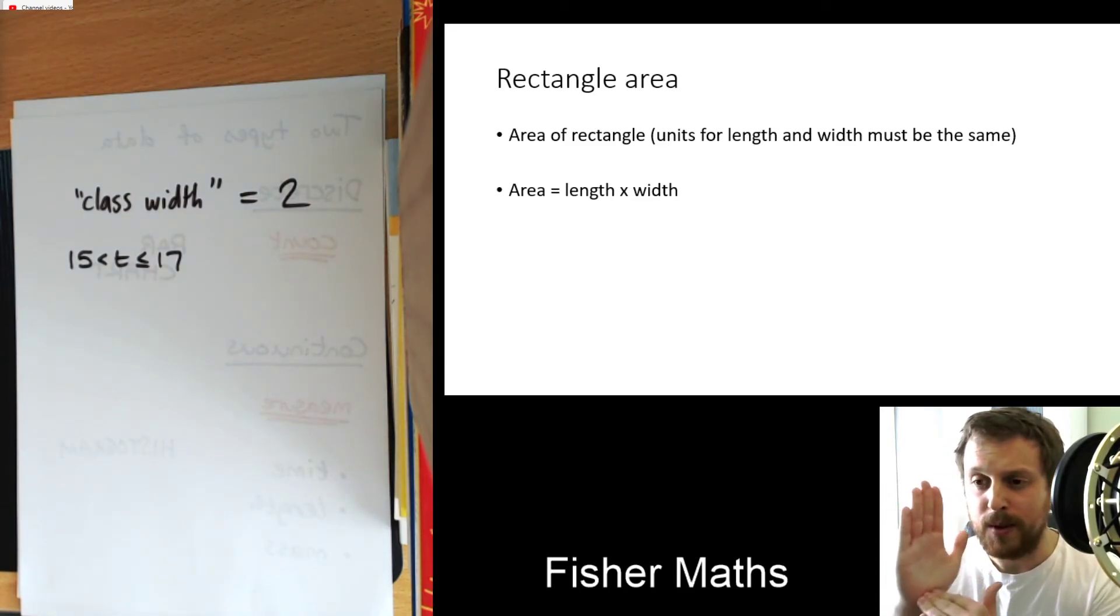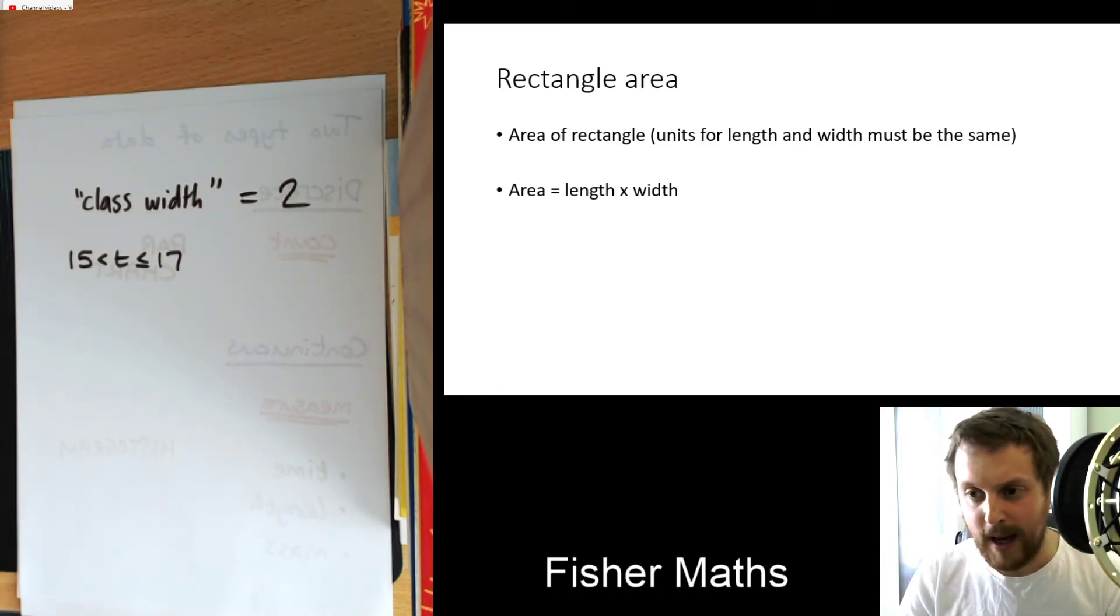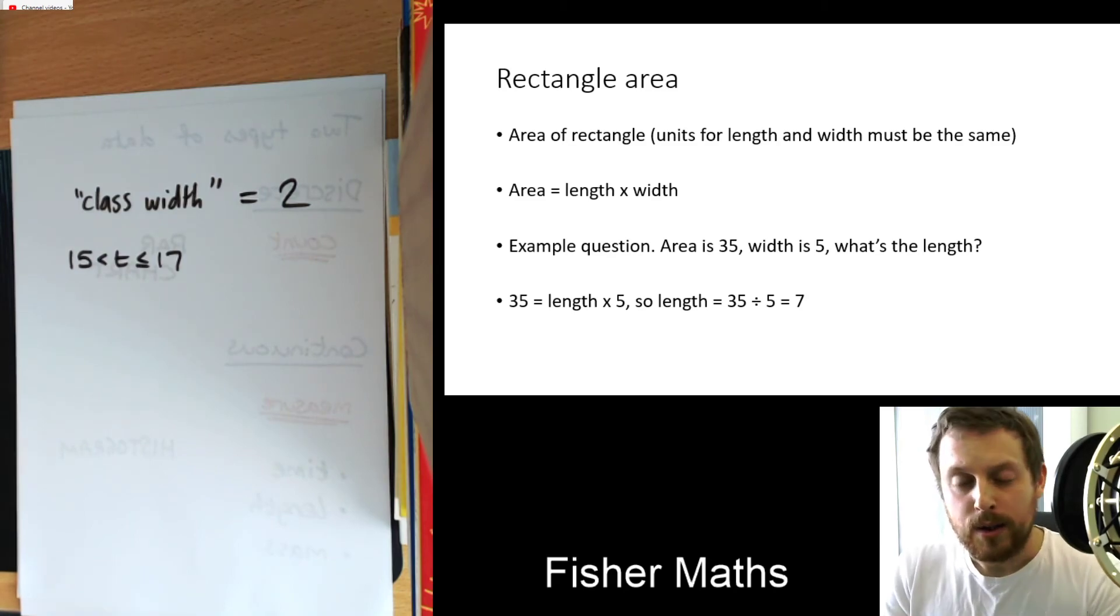And then for my formula, all I do is I times the two numbers together. I times the two numbers together. I do the length times the width. And then if they'd both been in centimeters, then the rectangle's area would be in centimeters squared. If they'd both been in meters, then it would be meters squared or square meters.